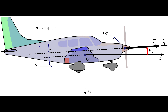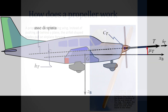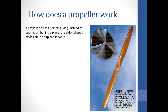Propellers operate within a specific range of speeds and conditions. The rotational speed of a propeller is measured in revolutions per minute, or RPM. Higher RPMs generally produce more thrust, but there is a trade-off between thrust and efficiency. Engineers carefully design propellers to balance these factors and ensure optimal performance for different types of aircraft.